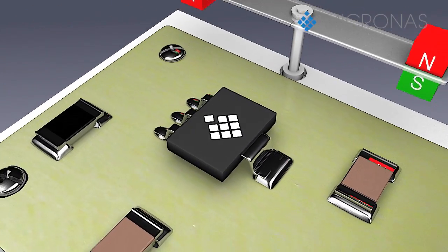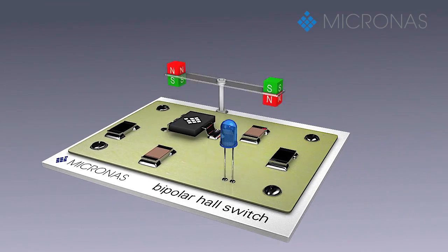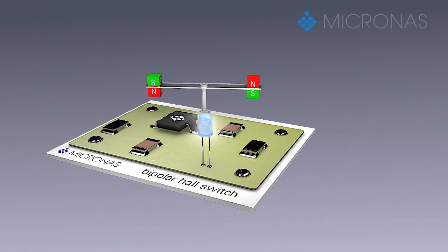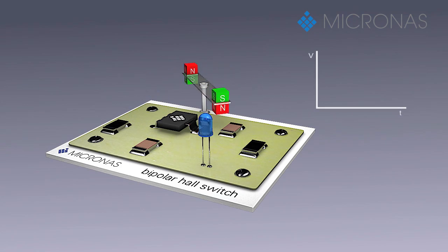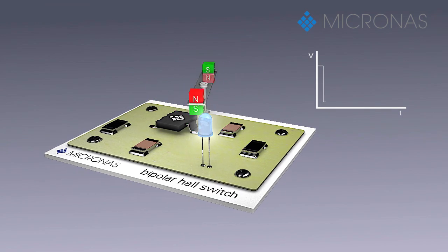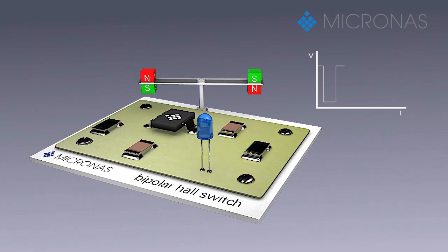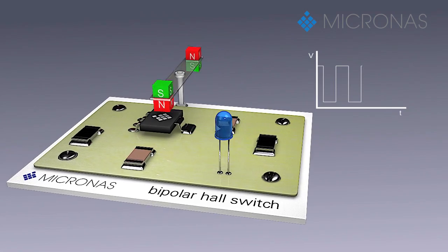The comparator compares the actual magnetic flux through the hall plate with fixed switching points. If the magnetic field strength of the south pole is higher than the specified switching level, then the output turns to low. It turns to high when the magnetic field strength of the north pole is lower than the specified switching value.